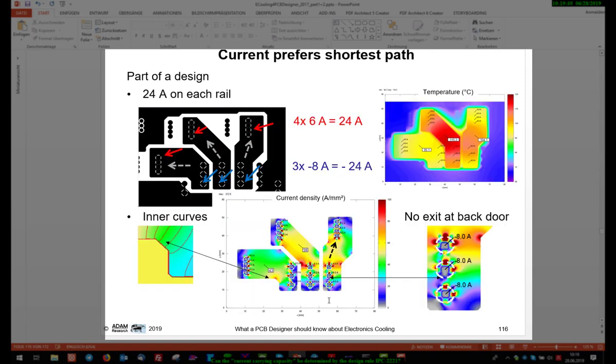This is an example of a detailed calculation. We have a current of 24 amps in each of these three traces. Each trace has an individual temperature. Each trace has an individual current density pattern. And it's impossible to get the temperature of the three traces by just reading the IPC graphs.